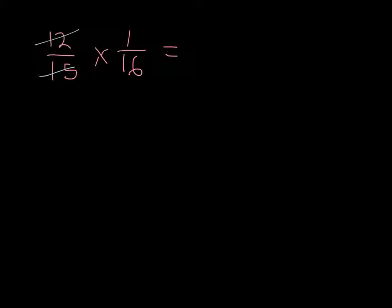12 and 15 have a common multiple. That common multiple is 3. So when I divide 12 by 3, I get 4. And when I divide 15 by 3, I get 5. So now my problem reads 4 fifths times 1 sixteenth.